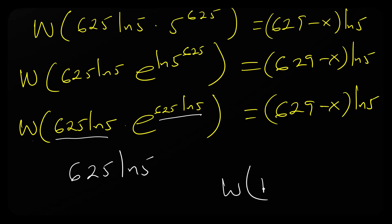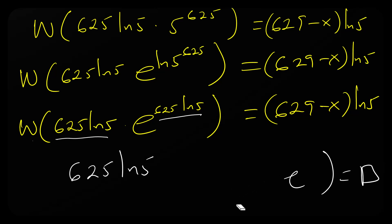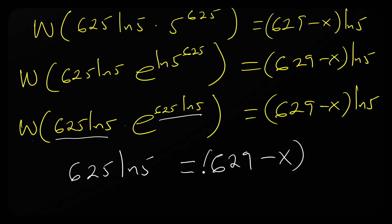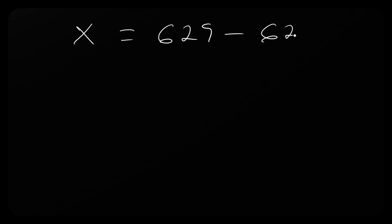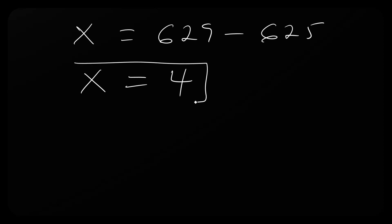So we have 625 ln 5 equals (629 minus x) ln 5. The ln 5 cancels on both sides, giving 625 equals 629 minus x. Therefore x equals 629 minus 625, so x equals 4. Subscribe to this channel for more exciting videos like this.